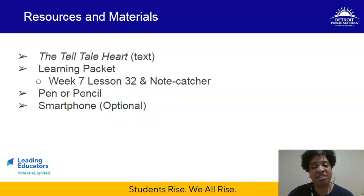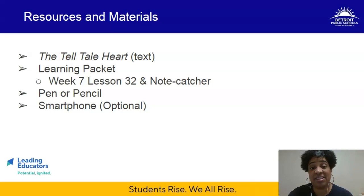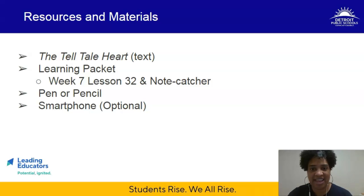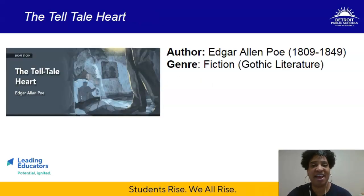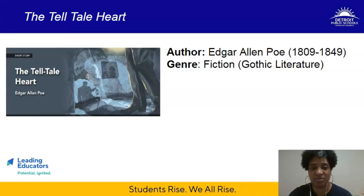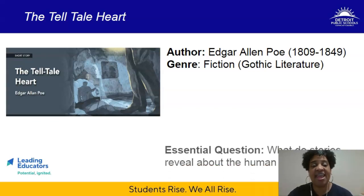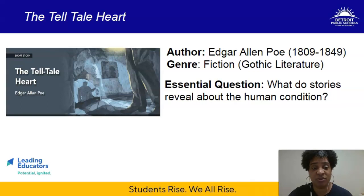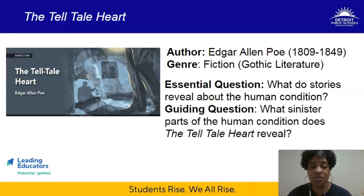Let's make sure that we have our materials: you need The Telltale Heart text, your learning packet week 7 lesson 32 note catcher, pen or pencil, and a mobile device is optional if you'd like to access the text digitally. The text is written by Edgar Allan Poe — it's an example of gothic literature and a psychological thriller, connected to our central question: what do stories reveal about the human condition? And its own guiding question: what sinister parts of the human condition does The Telltale Heart reveal?